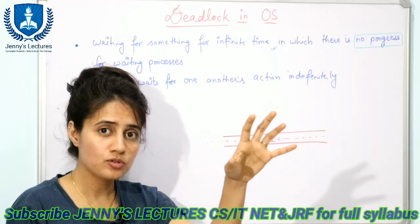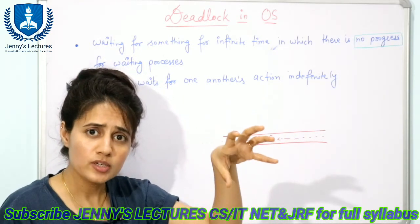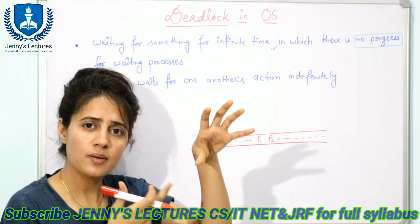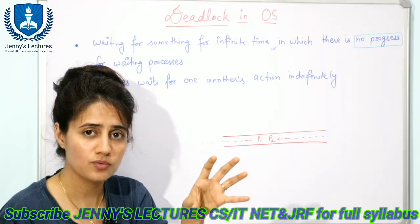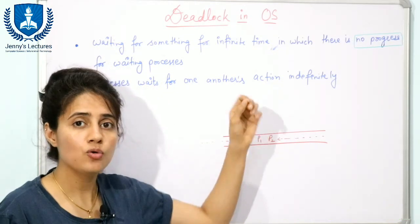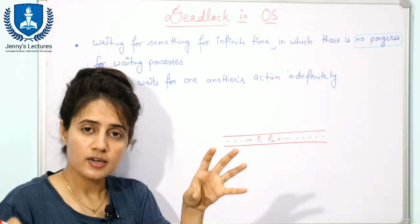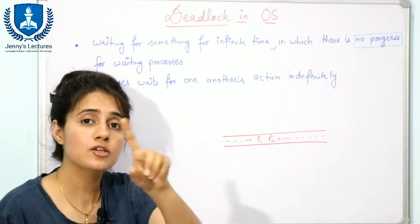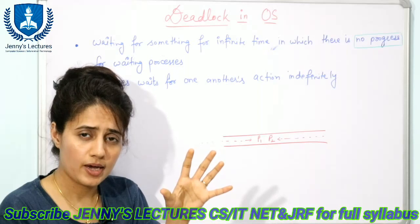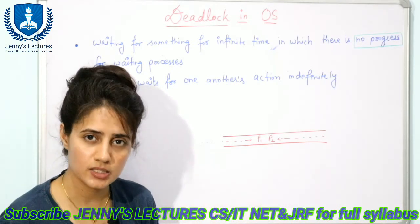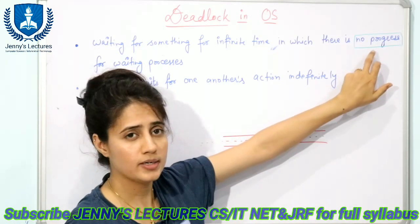In starvation, higher priority processes keep coming and low priority processes wait for the CPU, but progress is still there — the CPU is running some processes and they are executing and terminating. Low priority processes are not getting the CPU because of priority, but the CPU itself is not blocked. Maybe after 15 minutes or a few hours, higher priority processes stop coming and the low priority process eventually gets the CPU. But if there is no progress at all, then there is deadlock.